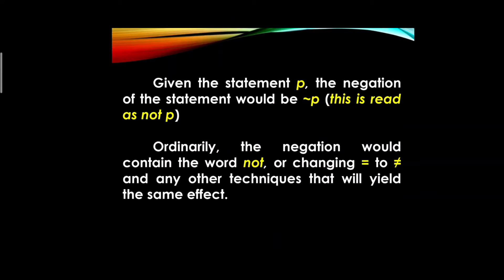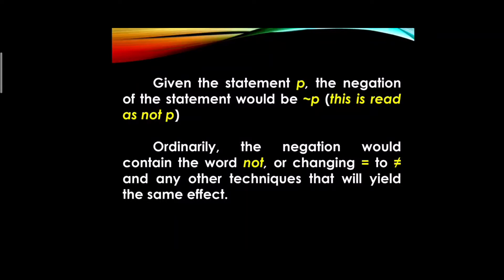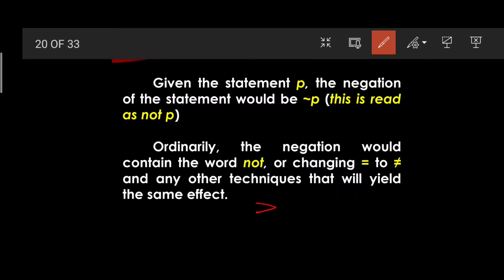Ordinarily, the negation of a statement contains the word 'not.' For example, 'two planes intersect' negated becomes 'two planes do not intersect.' If dealing with mathematical equations involving equality or inequality symbols, we change the symbol accordingly — for example, ≥ negated becomes < (not greater than or equal to).